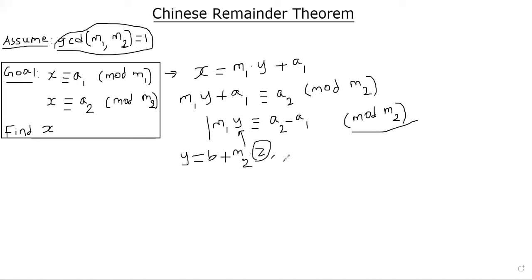All right. So and now we can think about this equation. This is the equation we need to solve. So we go back and substitute wherever y is by this number b plus M2 times z. Z is any integer, by the way, it can be negative as well. Plus A1.